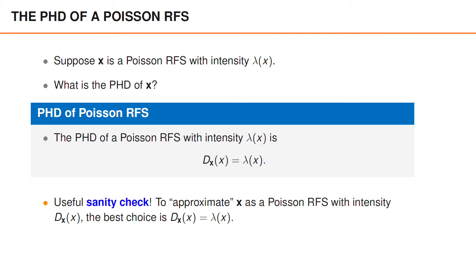Our motivation for computing the PHD of a random finite set is to approximate the random finite set as a Poisson point process and use the PHD of the original random finite set as the intensity function. If the original random finite set is already a Poisson point process, the approximation should, of course, have the same intensity function as the original, since both would then be Poisson point processes with identical intensity functions. This result simply confirms that using the original intensity function is the best choice for the approximating Poisson point process.